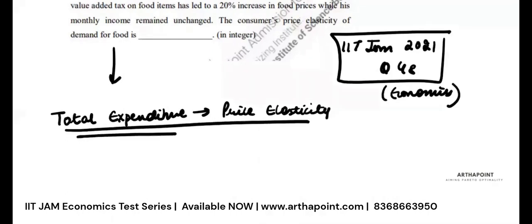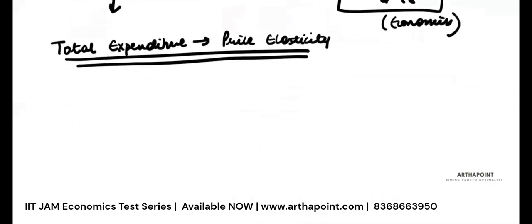According to the expenditure method, what is expenditure? Expenditure is price into quantity. Expenditure is the amount that you spend on any commodity.